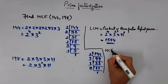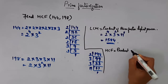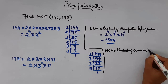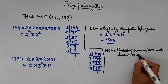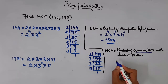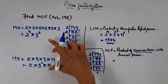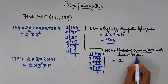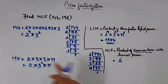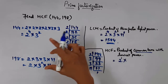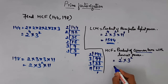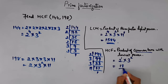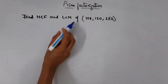Now for HCF, it is given by the product of common terms with the lowest power. The common terms in both factorizations are 2 and 3. The lowest power of 2 is 1, and the lowest power of 3 is 2. So HCF is 2 into 9, which is 18. So HCF is 18 and LCM is 1584.